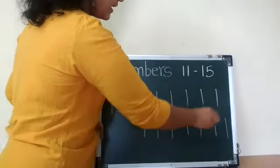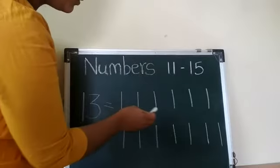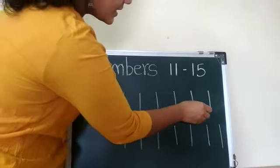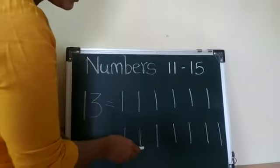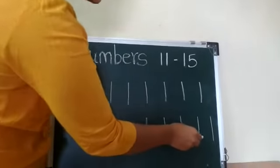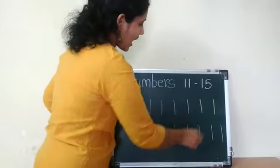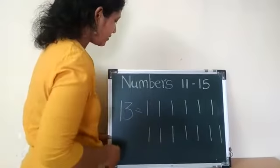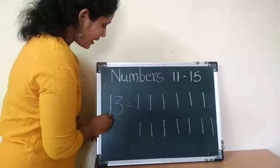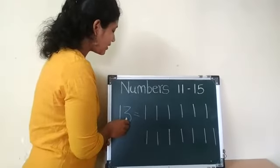How many standing lines are here? Count it. 1, 2, 3, 4, 5, 6, 7, 8, 9, 10, 11, 12, 13. These are 13 standing lines. Okay. And this is number 13. 1, 3, 13. Say with me: 1, 3, 13.